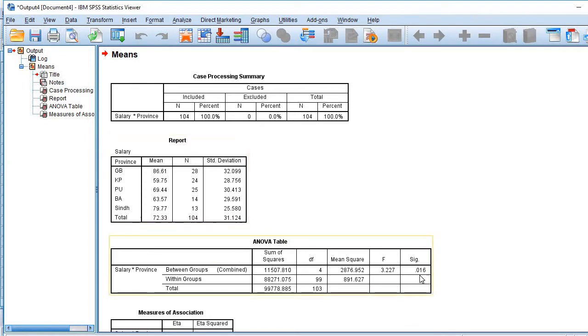Here you see significance value is 0.016, so that's less than 0.05. That means it is statistically significant. That means the provinces statistically differ among each other on mean values of the salaries of their employees.